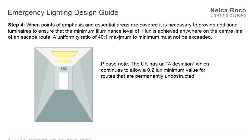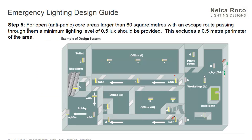Step 5: for open or anti-panic core areas larger than 60 square meters with an escape route passing through them, a minimum lighting level of 0.5 lux should be provided. This excludes a 0.5-meter border around the perimeter of the area — meaning you can offset the calculation surface from the wall by 0.5 meters. On the next video I will explain how to do that calculation, as it is better demonstrated in the software. For the open area, 0.5 lux is the requirement.